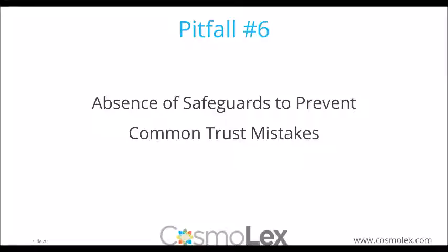Regarding absence of safeguards — these are the types of things you need in place to prevent common trust mistakes: a commingling safeguard, preventing overdrafts, no duplicate check numbers, everything matter-centric. In manual systems you won't have these whatsoever. In general accounting systems some could possibly be set up through workarounds, but legal-specific trust accounting tools are what give you these safeguards. As a business owner, you can outsource activities to a CPA or bookkeeper, but the fiduciary responsibility cannot be delegated — at the end of the day it's the responsibility of the firm.